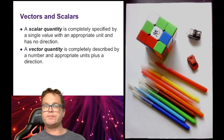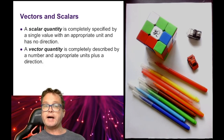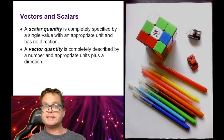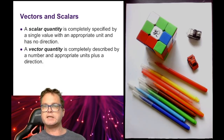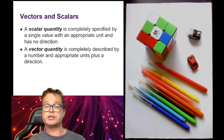A vector quantity has a number, a unit, as well as a direction. For example, a displacement: in order to get to my friend's house, I need to go 10 kilometers east — it has the number 10, the unit kilometers, and the direction east. Or you may refer to a force: the force on this object is 10 newtons downwards. Again, there we have a direction associated.